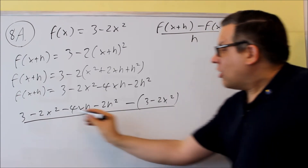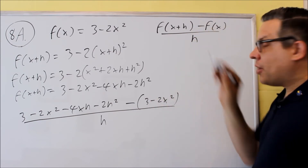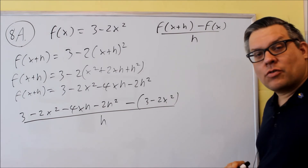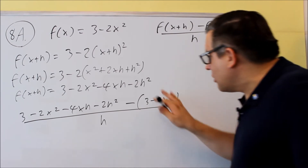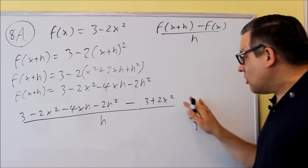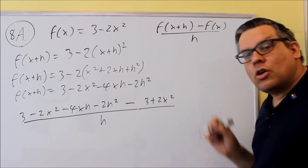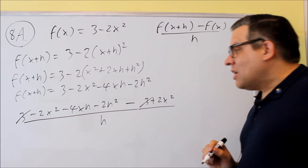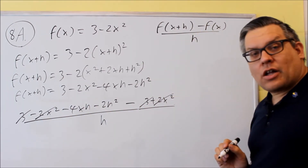So again, all this from here to here is f of x plus h, minus sign — part of the formula — and f of x is that parenthesis part afterwards. Now instead of writing all this out again, I'm just going to go ahead and automatically distribute the negative. So if I distribute the negative, I get negative 3 plus 2x squared. Make sure you distribute that negative to both terms. Now that this is complete, I can start canceling some terms.